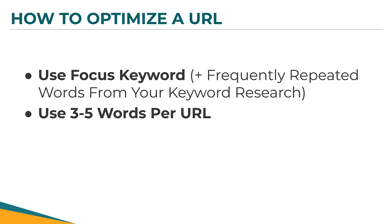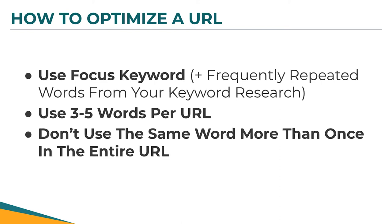Here's the formula: in your URL — and we're talking about individual pages and posts, not your domain name — you want to include your focus keyword for that particular page. If room allows, you can include other frequently repeated words from your keyword research, like 'outdoor patio installation.' However, limit your URLs to about three to five words. Most of the time I keep mine to about three. Also, never use the same word more than once in your entire URL.